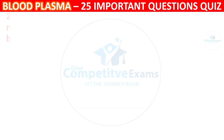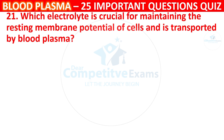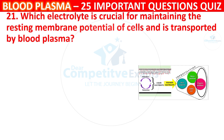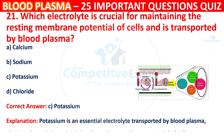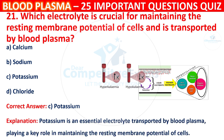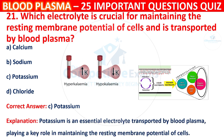Question 21: Which electrolyte is crucial for maintaining the resting membrane potential of cells and is transported by blood plasma? Your options are Calcium, Sodium, Potassium, or Chloride. The correct answer is C, i.e. Potassium. Potassium is an essential electrolyte transported by blood plasma, playing a key role in maintaining the resting membrane potential of cells.